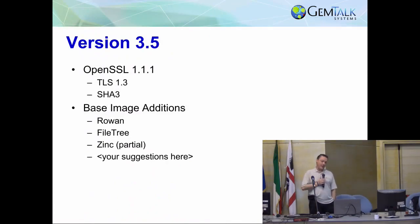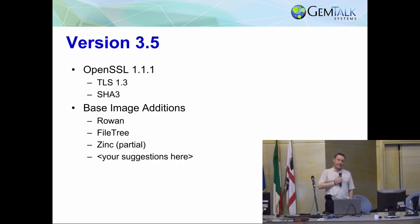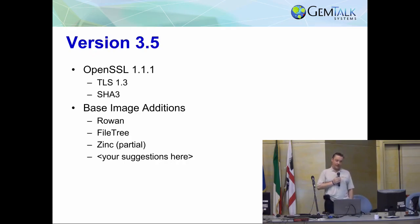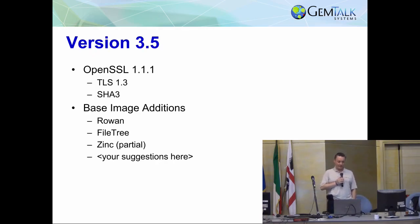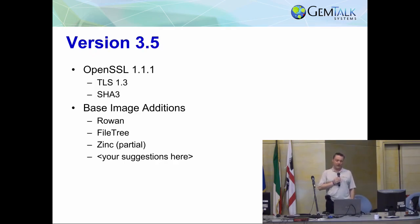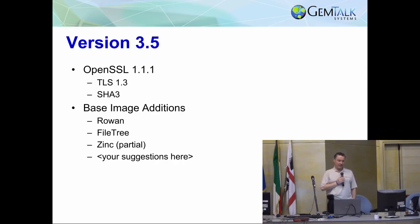Also in version 3.5, we're going to upgrade to OpenSSL 1.1.1, which was actually released yesterday. That brings us TLS 1.3 — when you set up secure connections, you save at least one round trip per connection. So when TLS 1.3 goes across the internet and you click on a secure HTTPS site, the site should load faster. There are also SHA-3 primitives in that which we'll be adding Smalltalk accessors to. We're going to add some stuff to the base image — for sure the Rowan stuff will be in there. We're going to do a port of FileTree that's already in progress and some parts of STON. If you've got suggestions for things that are really useful in Smalltalk you'd like to see in the GemStone base image out of the box, drop us a line.